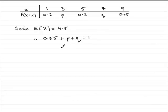And if we take 0.55 from both sides we've got P plus Q equals 1 minus 0.55 and that leaves us with 0.45.